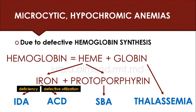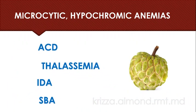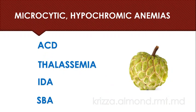You can understand the common causes of microcytic hypochromic anemias by understanding the composition of a hemoglobin molecule, or you can use a mnemonic. The mnemonic we use here is ATIS — using the initials of the four common conditions: A for anemia of chronic disease, T for thalassemia, I for iron deficiency anemia, and S for sideroblastic anemia.